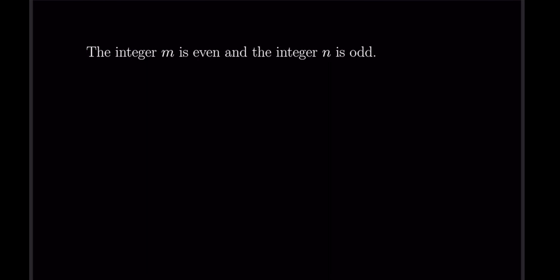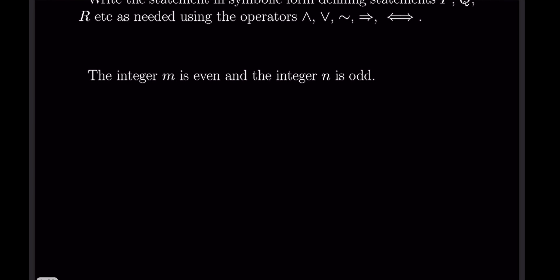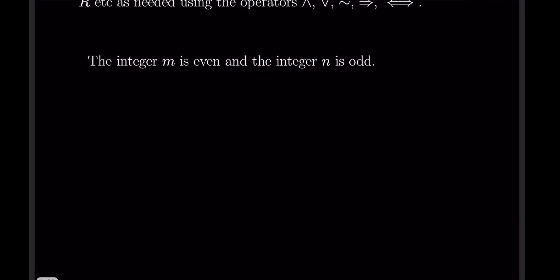Let's start with: 'the integer m is even and the integer n is odd.' The statement 'the integer m is even' is actually an AND statement itself — it says something is an integer in the first place, and then that it is an even integer. Similarly, 'the integer n is odd' is also an AND statement itself.